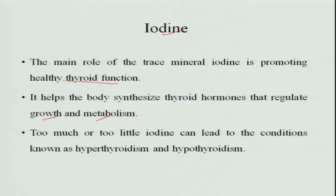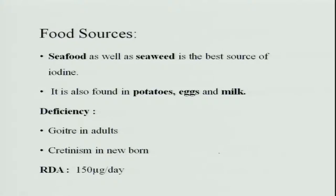Too much or too little iodine can lead to thyroid conditions: excess causes hyperthyroidism, and too little causes hypothyroidism. Food sources of iodine include seafood — the main source — as well as seaweed, and smaller amounts are found in potatoes, eggs, and milk.